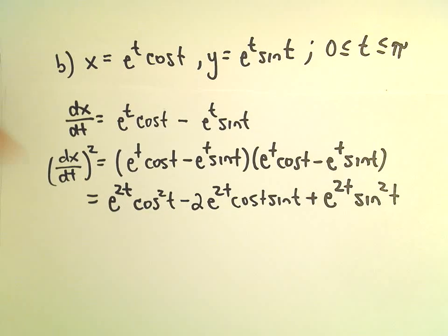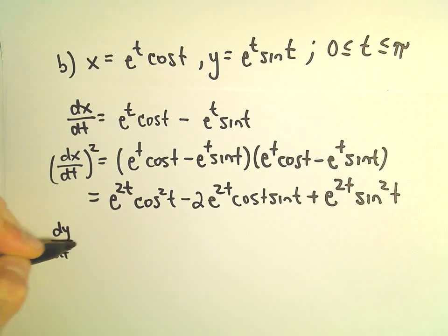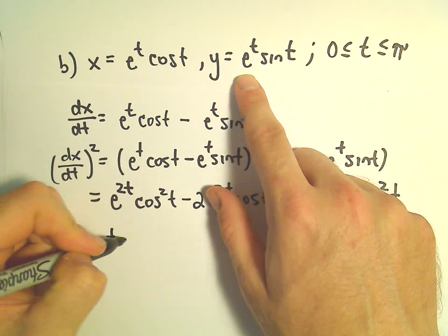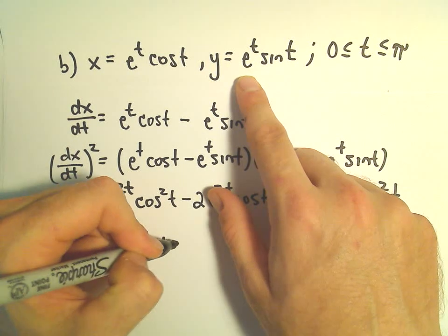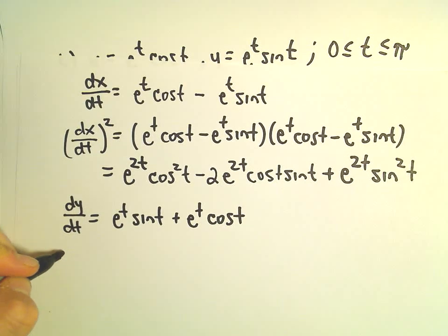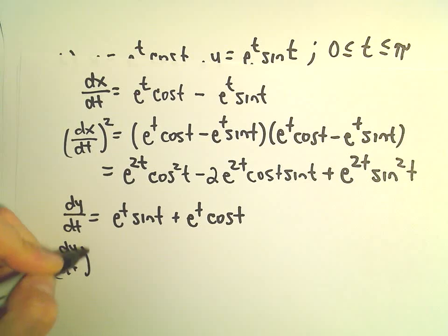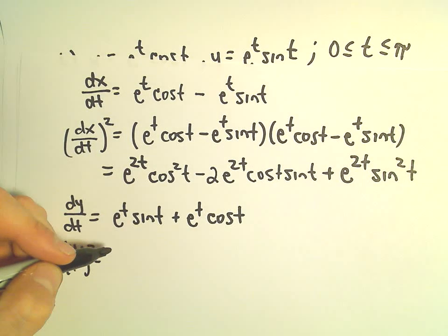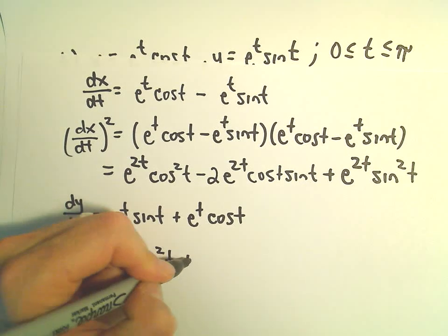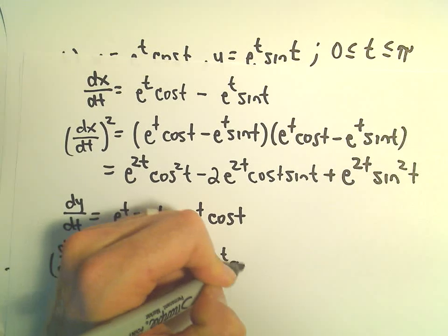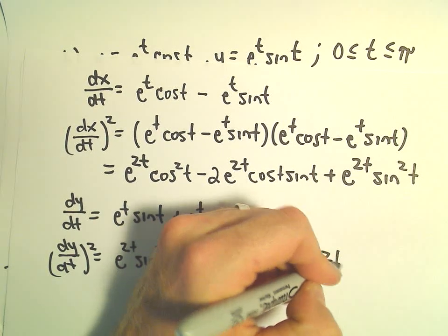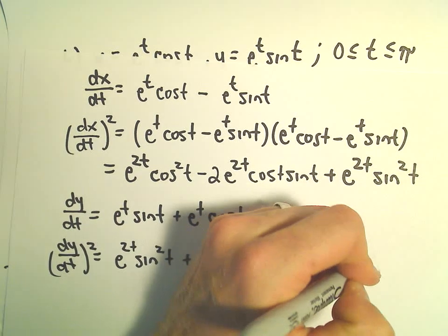Now we'll do the same thing for dy/dt. Using the product rule we get e to the t sine t plus e to the t cosine t. When we square this, we get e to the 2t sine squared t, plus 2 e to the 2t cosine t sine t, and then a positive e to the 2t cosine squared t.